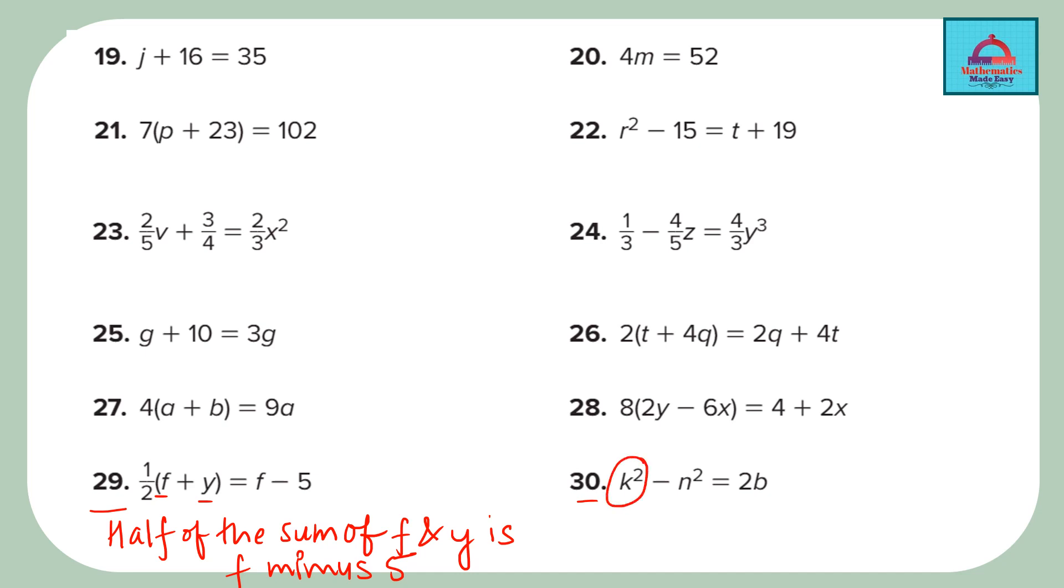Now let's do question 30. Here you see square of k, square of n, and you are subtracting. So k squared minus n squared, that's the left side, is equal to or can be written as 2 times b or twice b. Both are correct.